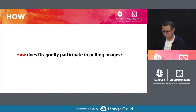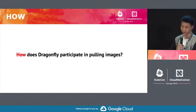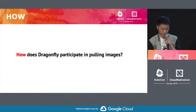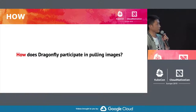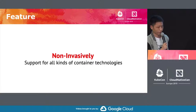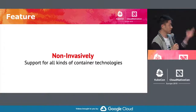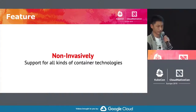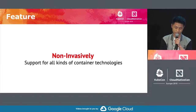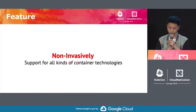Thanks. Hello, my name is John Ting, from Alibaba Group, one of the members of the Dragonfly team. Next, I will analyze how Dragonfly participates in pulling images. When we introduce Dragonfly, we usually list many features to show how excellent Dragonfly is. And one of the very important features is non-invasive support for all kinds of container technologies. Dragonfly can be integrated into current container systems easily to provide the ability of P2P image distribution, and you don't need to change any code of your container engine.